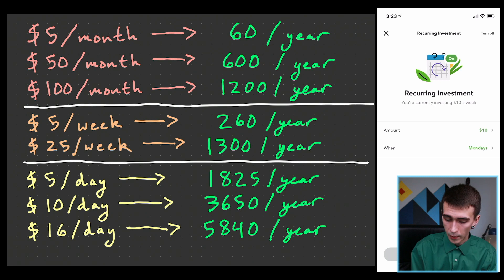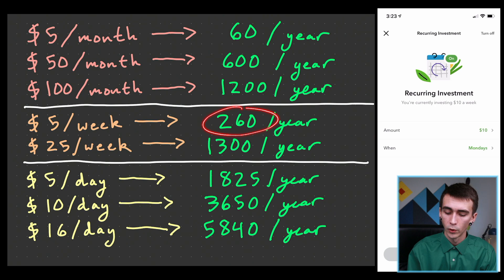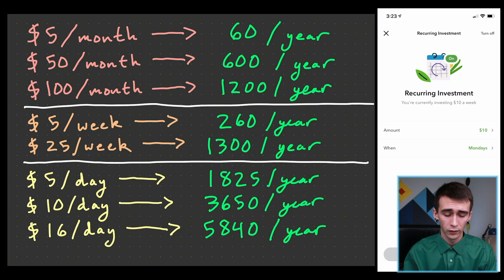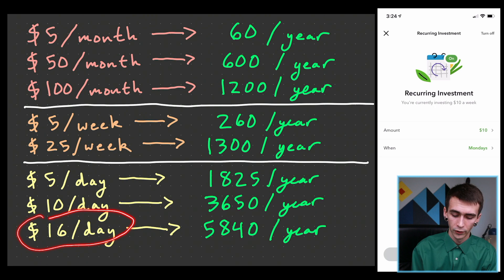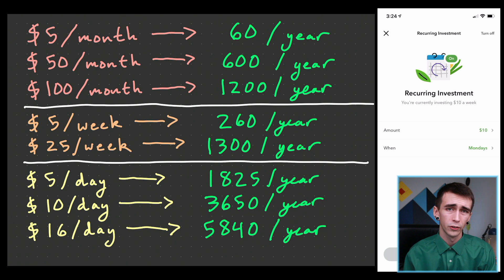On a weekly basis, $5 a week over 52 weeks is $260. $25 a week is about $1,300 a year. Going daily, $5 a day equals $150 a month or $1,825 a year. $10 a day is $3,650, and $16 a day is $5,840 per year. The reason I picked $16 is that $16.40 a day would max out a Roth IRA, since $6,000 is the yearly maximum contribution.